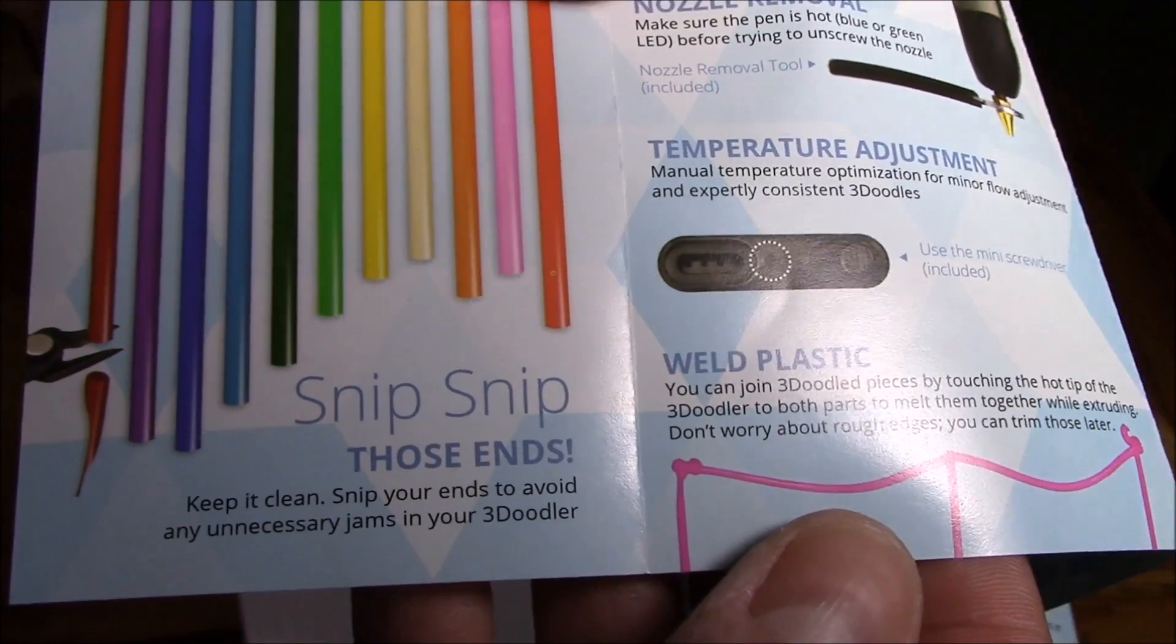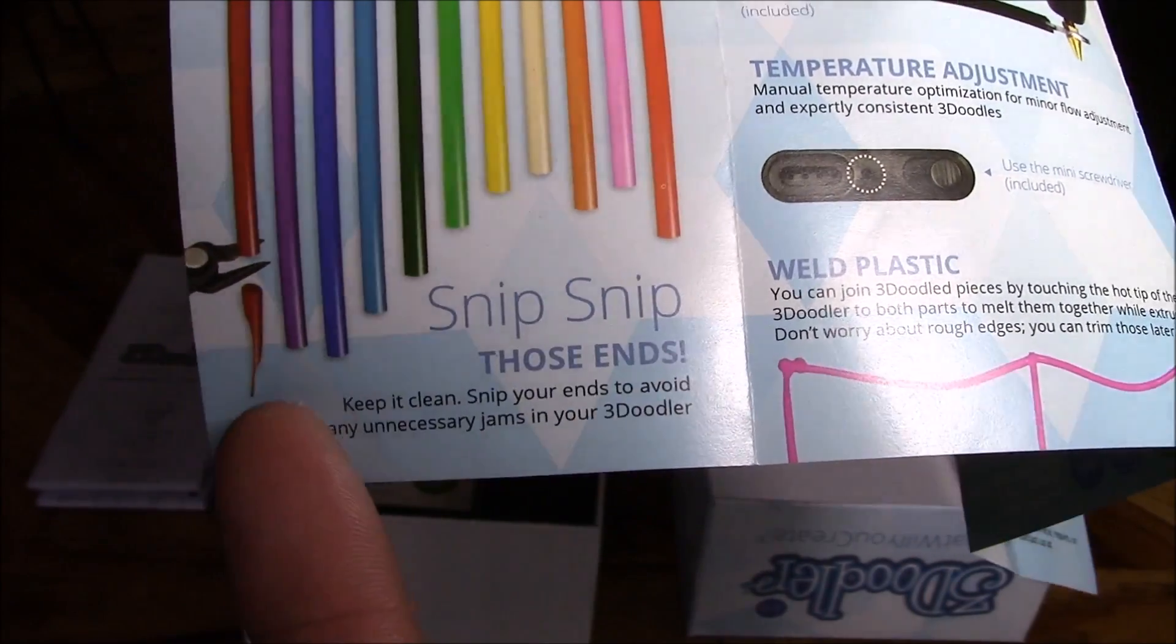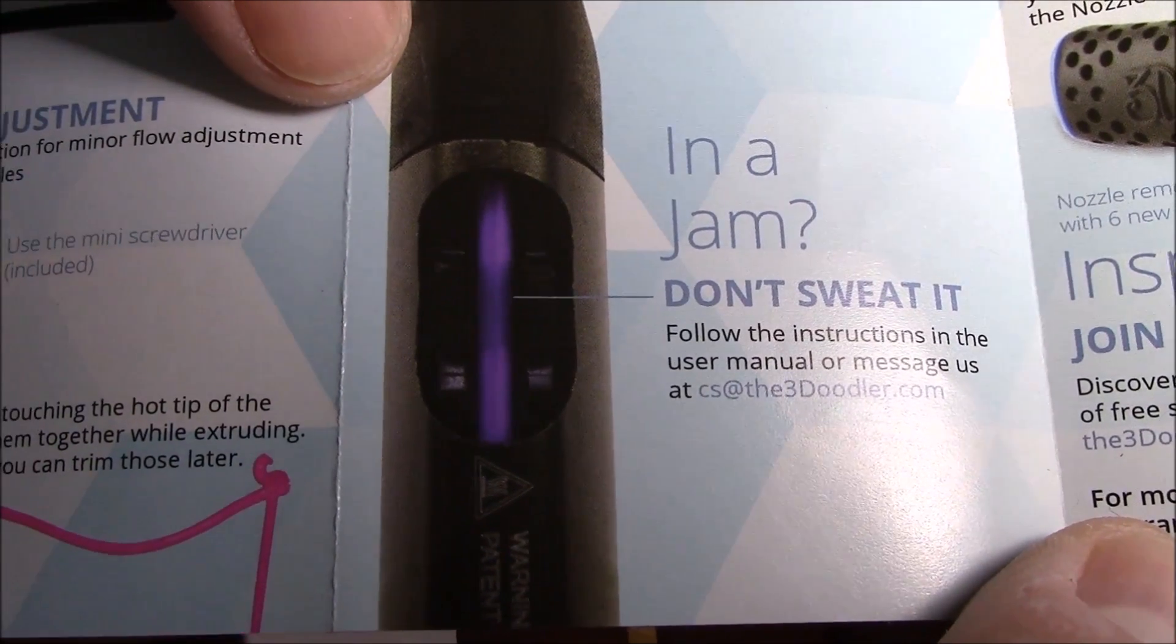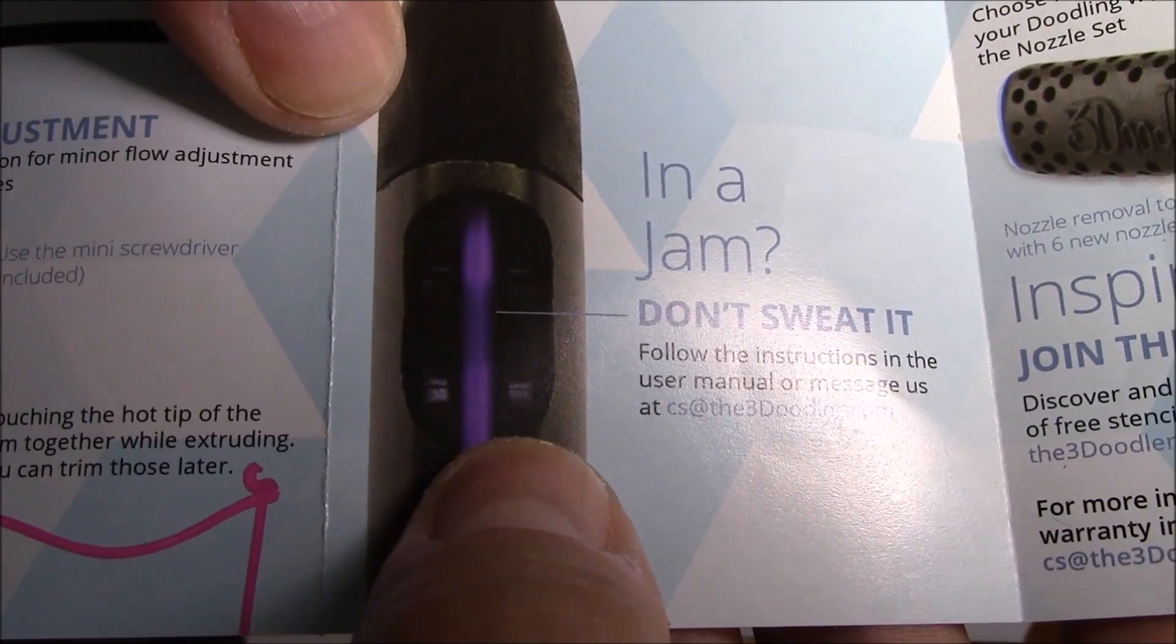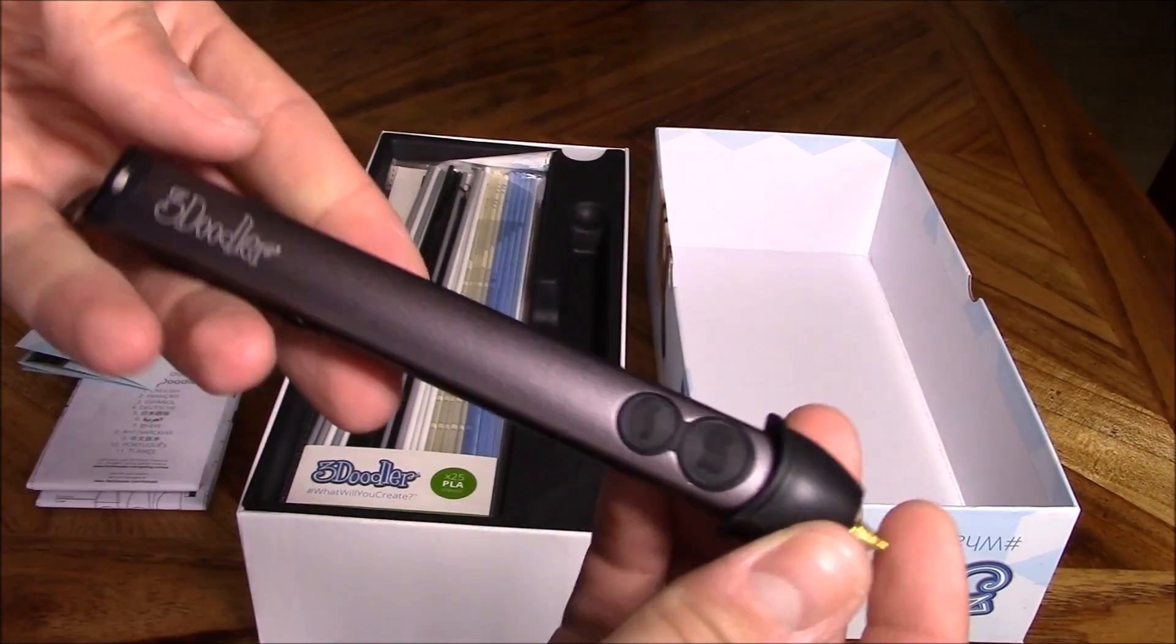Then you can swap out strands. Now to prevent clogging, they recommend you snip the ends so it doesn't clog the unit. And if your unit ever gets in a jam, then there's a little trap door that you can clean out the unit. I'm going to show you how to do all that. So here it is. It has a nice paint job right here, feels like it's maybe aluminum.